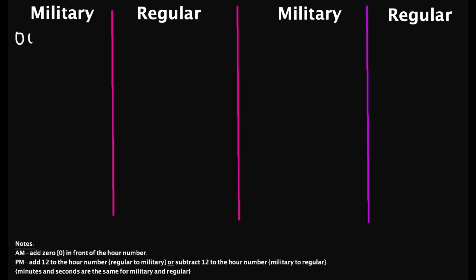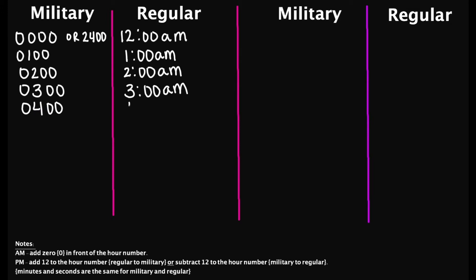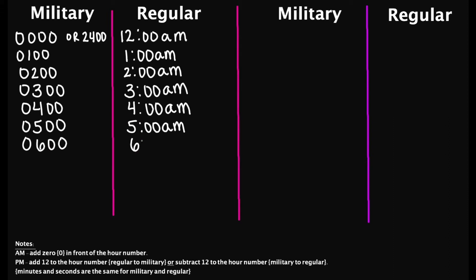0000 hours is 12 a.m., or you may see 2400 hours to represent 12 a.m. 0100 hours is 1 a.m. 0200 hours is 2 a.m. 0300 is 3 a.m. 0400 hours is 4 a.m. 0500 hours is 5 a.m. 0600 hours is 6 a.m.